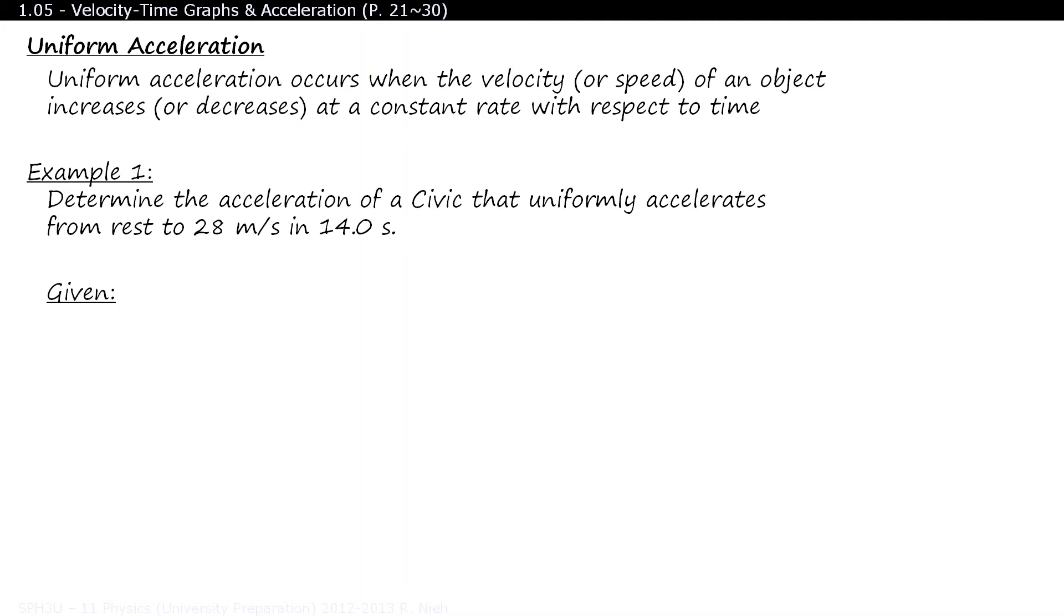Good. The first one is VI equals 0, since the car started from rest. Final velocity is at 28, and delta t is at 14. Don't forget R is for require, and we're looking for acceleration. A is for analysis, or the formula used to solve the problem, and S is for substitute and solve. And 28 divided by 14 equals 2. But what are the final units?